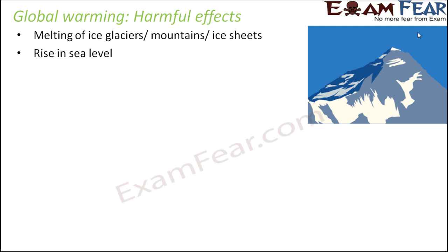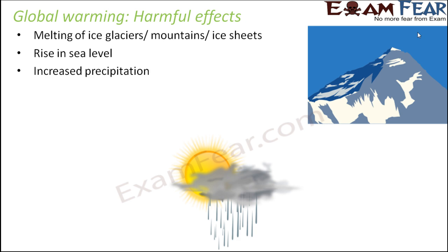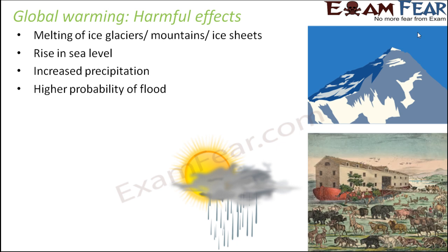Rise in sea level can even submerge coastal areas. Increased precipitation — increased rainfall and snowfall — leads to a higher probability of floods. Too much rainfall and water from melting polar ice caps results in floods, which cause destruction of houses, property, and lives.